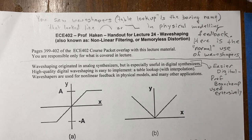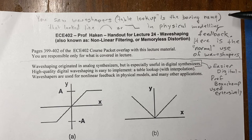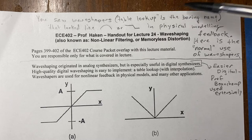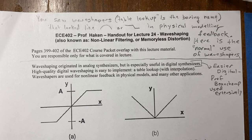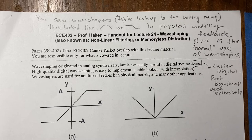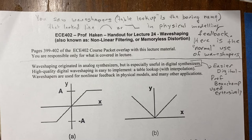You've seen wave shapers before. If you're a programmer, you might just call it a table lookup — that's kind of a boring name, wave shaper sounds cooler. It's called memoryless distortion because you have some index into a table and then you get an output, but there's no z-to-the-minus-ones involved. It's just a time-domain direct transfer function, or a table lookup.